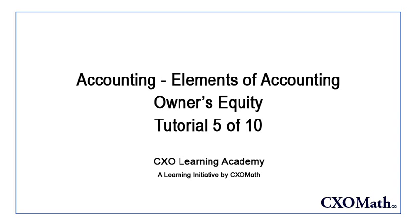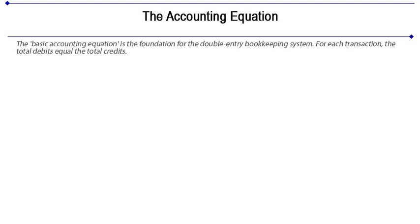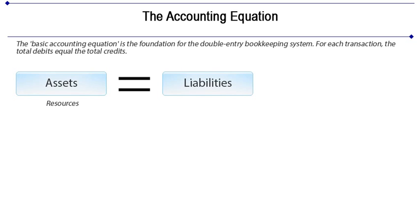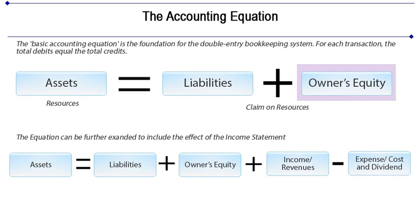The classification of equity in the balance sheet and the different types of transactions made in the equity account. To review the basic accounting equation: assets, that is the resource, equal to liabilities plus owner's equity. Liabilities plus owner's equity is the claim on resources. Equity or owner's capital is part of the equation which balances that equation along with liabilities.